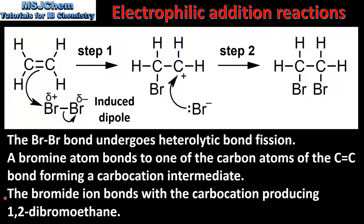The bromide ion then bonds with the carbocation, producing 1,2-dibromoethane. The bromide ion uses one of its lone pairs of electrons to form a bond with the carbocation. The movement of the pair of electrons is shown by this curly arrow. On the right we have the structure of the product, which is 1,2-dibromoethane.